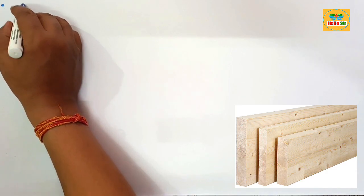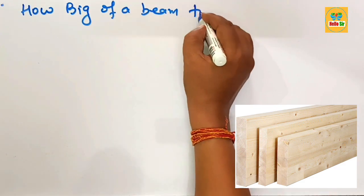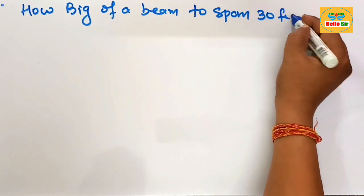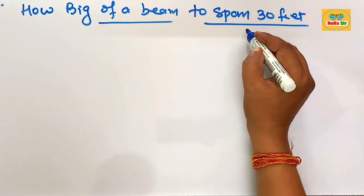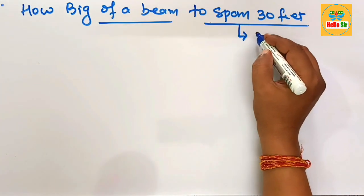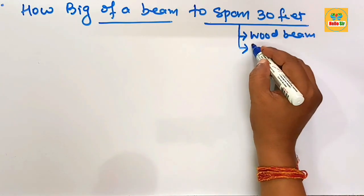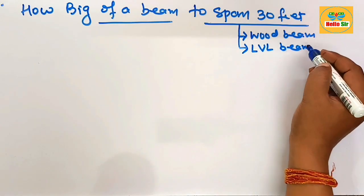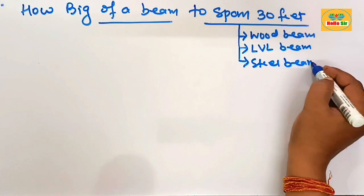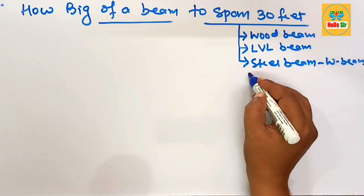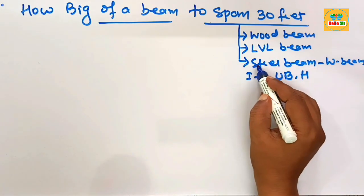In this video, you will learn how big of a beam size you need to span 30 feet. You have to figure out the beam size required to span a 30-foot length. There are different types of beam materials: the wood beam, the LVL beam also known as laminated veneer lumber, and the steel beam also known as the W beam, I-beam, universal beam, or H beam — there are several names for steel beam structures.